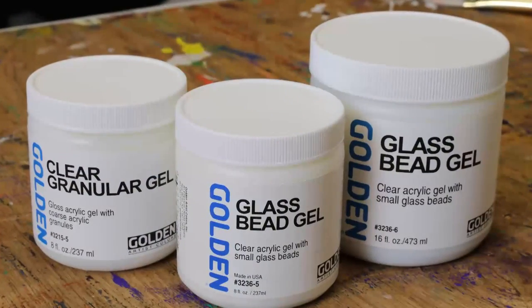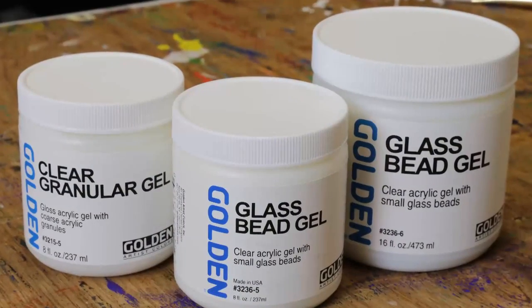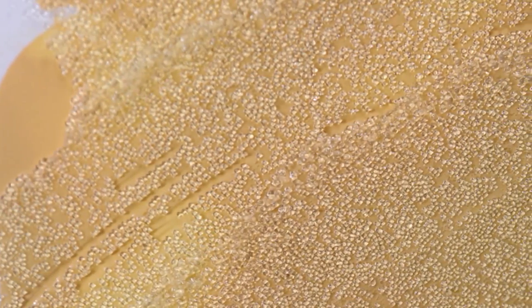Two very special gels offered by Golden are glass bead gel and clear granular gel. Both gels can be used to create luminous effects because they are a suspension of clear particles in clear gel.